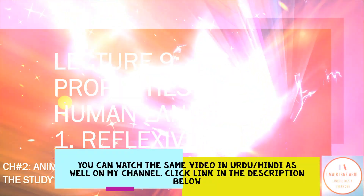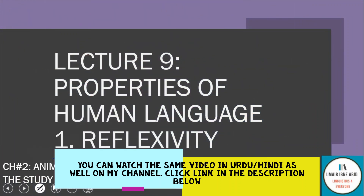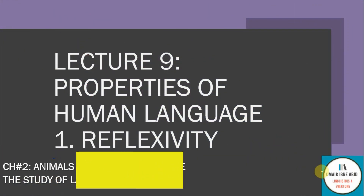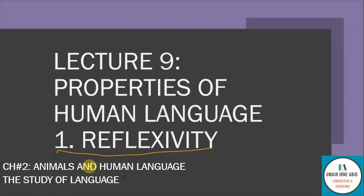In the name of Allah, the entirely merciful, the specially merciful. May peace, mercy and blessings of Allah the Almighty be upon all of you. I am Umar ibn Abid and this is lecture 9, Properties of Human Language, and we are going to look at the first property: Reflexivity. This is chapter 2, Animals and Human Language. In each lecture, we are going to discuss both human language and a little bit about animal language, and after a few lectures, we will look in detail at animal language. So let's start.